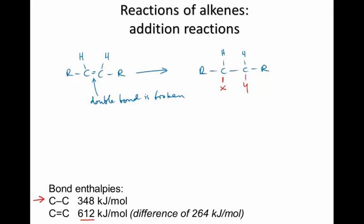However, when an addition reaction happens, you only break one of the two parts of the double bond. If you look at the difference between these two bond enthalpies, the difference is only 264 kilojoules per mole. So that means to turn a carbon-carbon double bond into a carbon-carbon single bond only requires 264 kilojoules per mole.